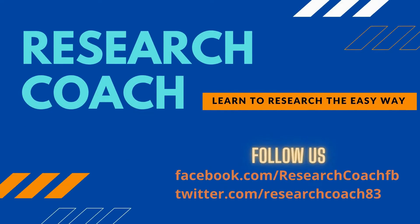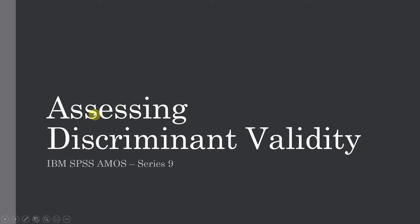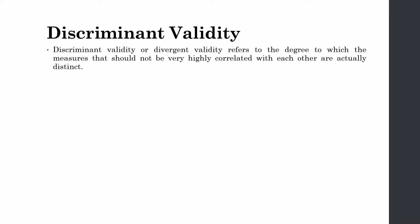In this session we are going to focus on assessing discriminant validity using IBM SPSS AMOS series 9. What is discriminant validity? Once you have assessed the composite reliability and convergent validity, as we have done in the last session, the next step is assessing discriminant validity. Discriminant validity, or divergent validity, refers to the degree to which measures that should not be highly correlated with each other are actually distinct or not very highly correlated with each other.